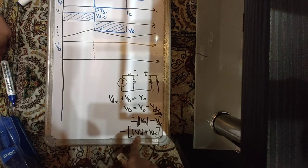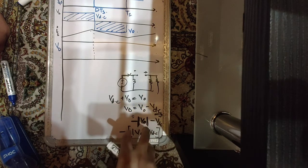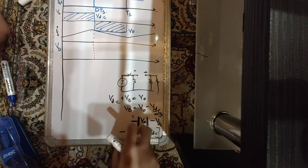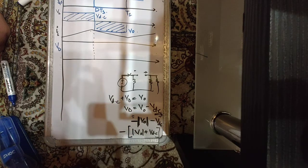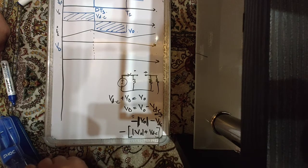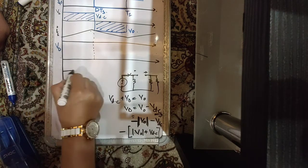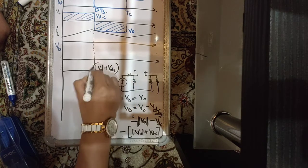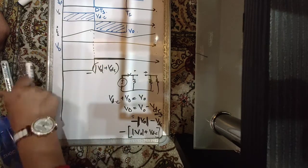For the diode voltage waveform: in the first interval VD = V0 − VDC. Since V0 is negative, VD = −|V0| − VDC = −(|V0| + VDC). This means the diode — and the switch — are stressed by the sum of output and input voltages. Unlike the buck converter (stressed only by VDC) or boost converter (stressed only by V0), the buck-boost converter's devices must be rated for VDC + |V0|. In the second interval when the diode conducts, VD = 0.